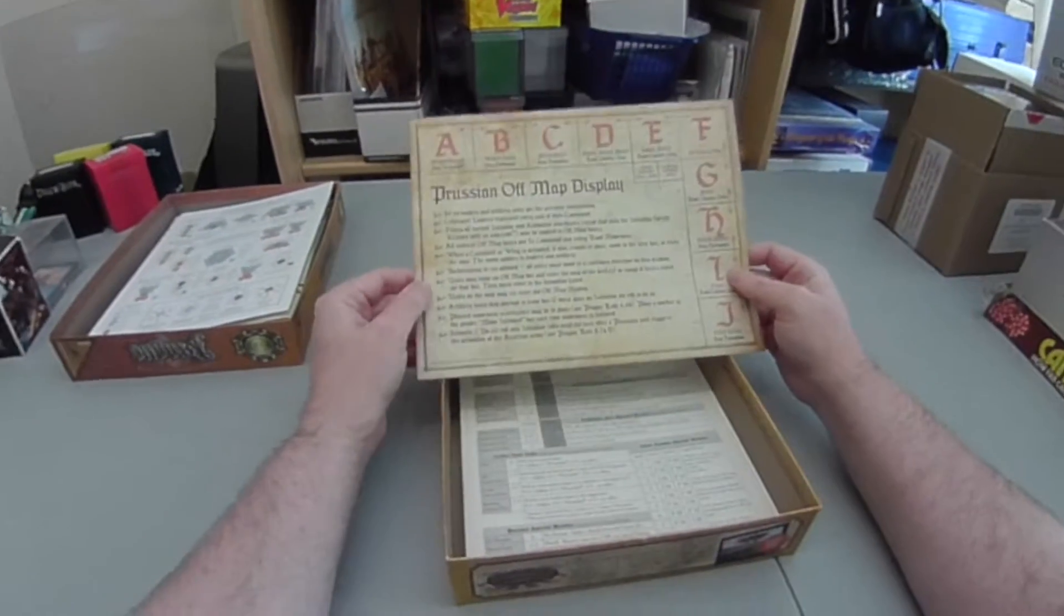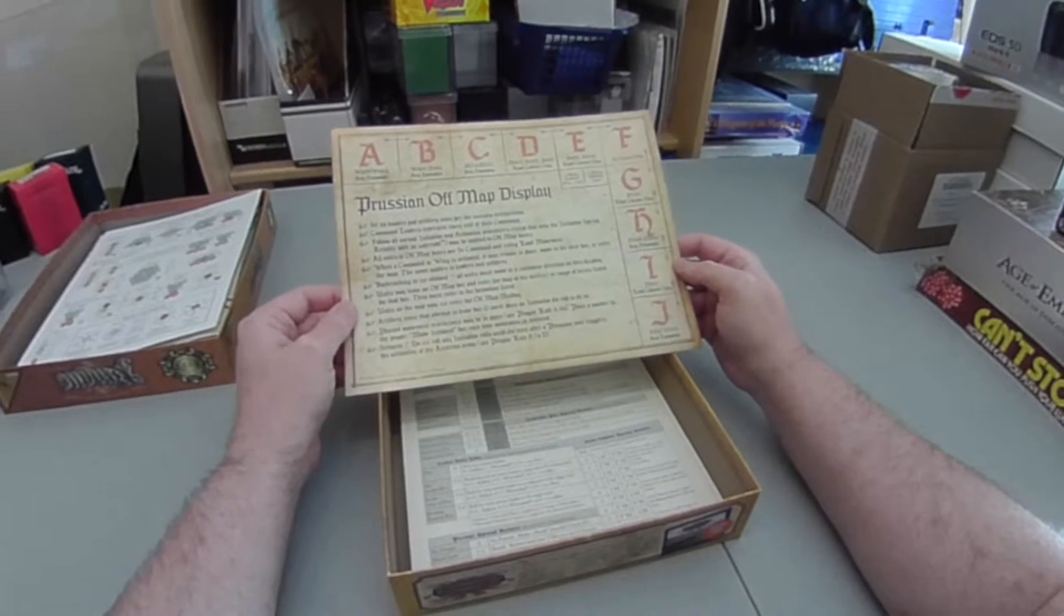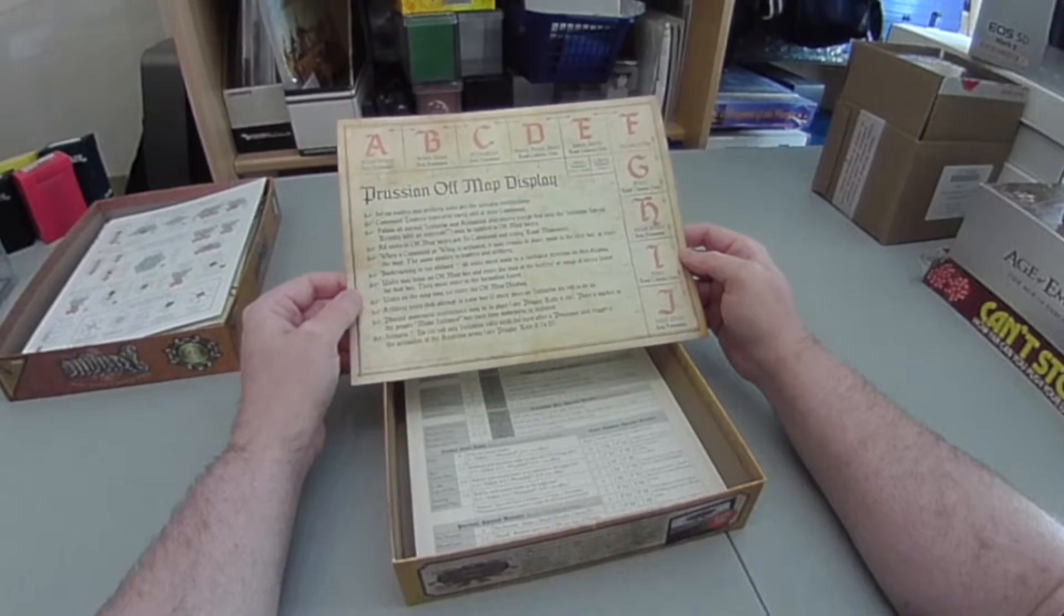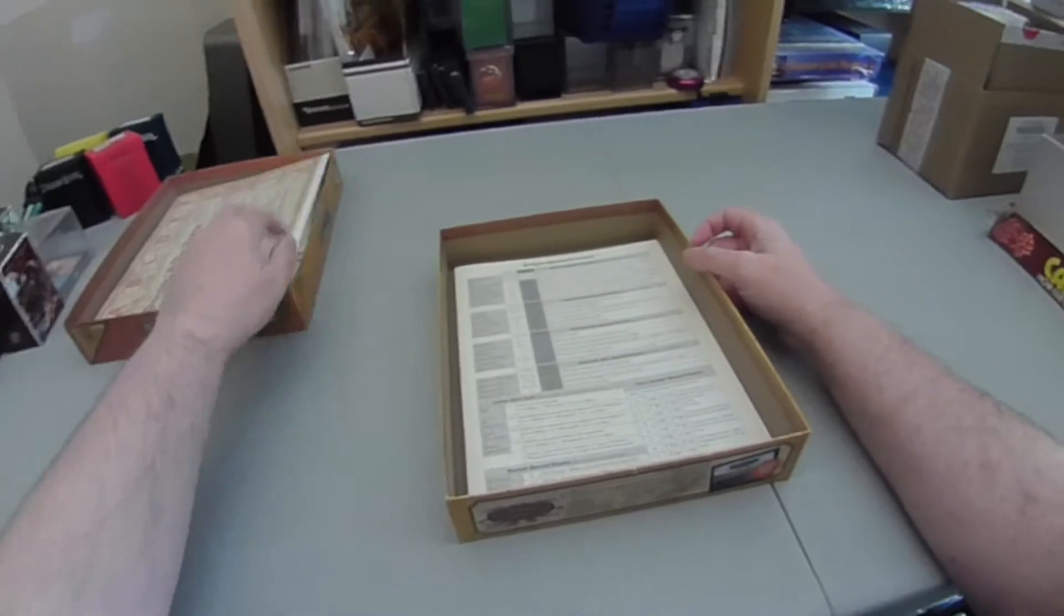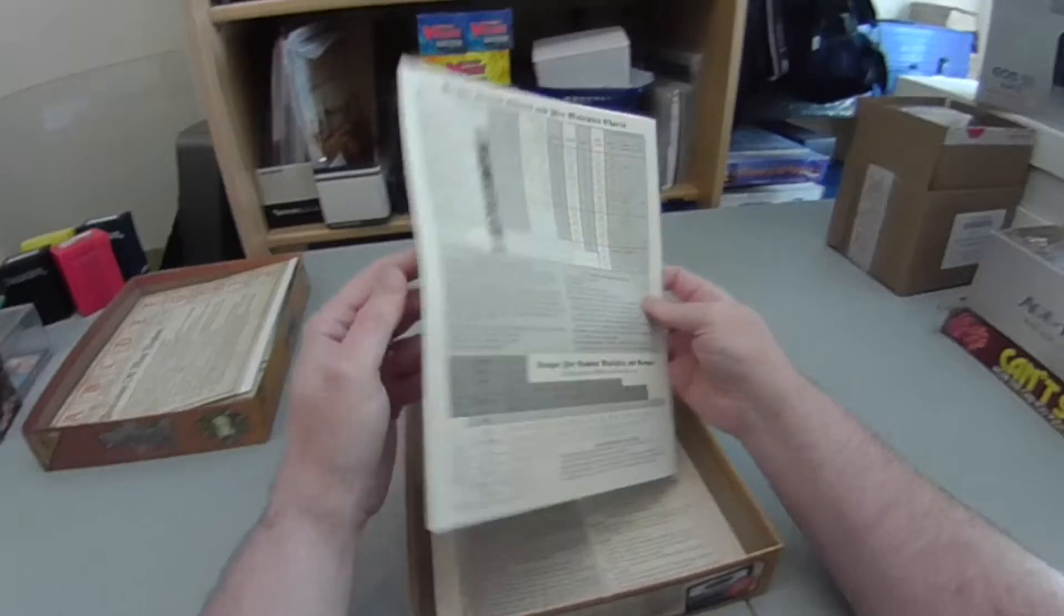Now you've got an off-map display. You can move troops off-map, so they can come on at the edge of the board somewhere. Next one up is charts and tables. Now, special results. This is quite interesting. There's lots of ways of getting special results in this game.